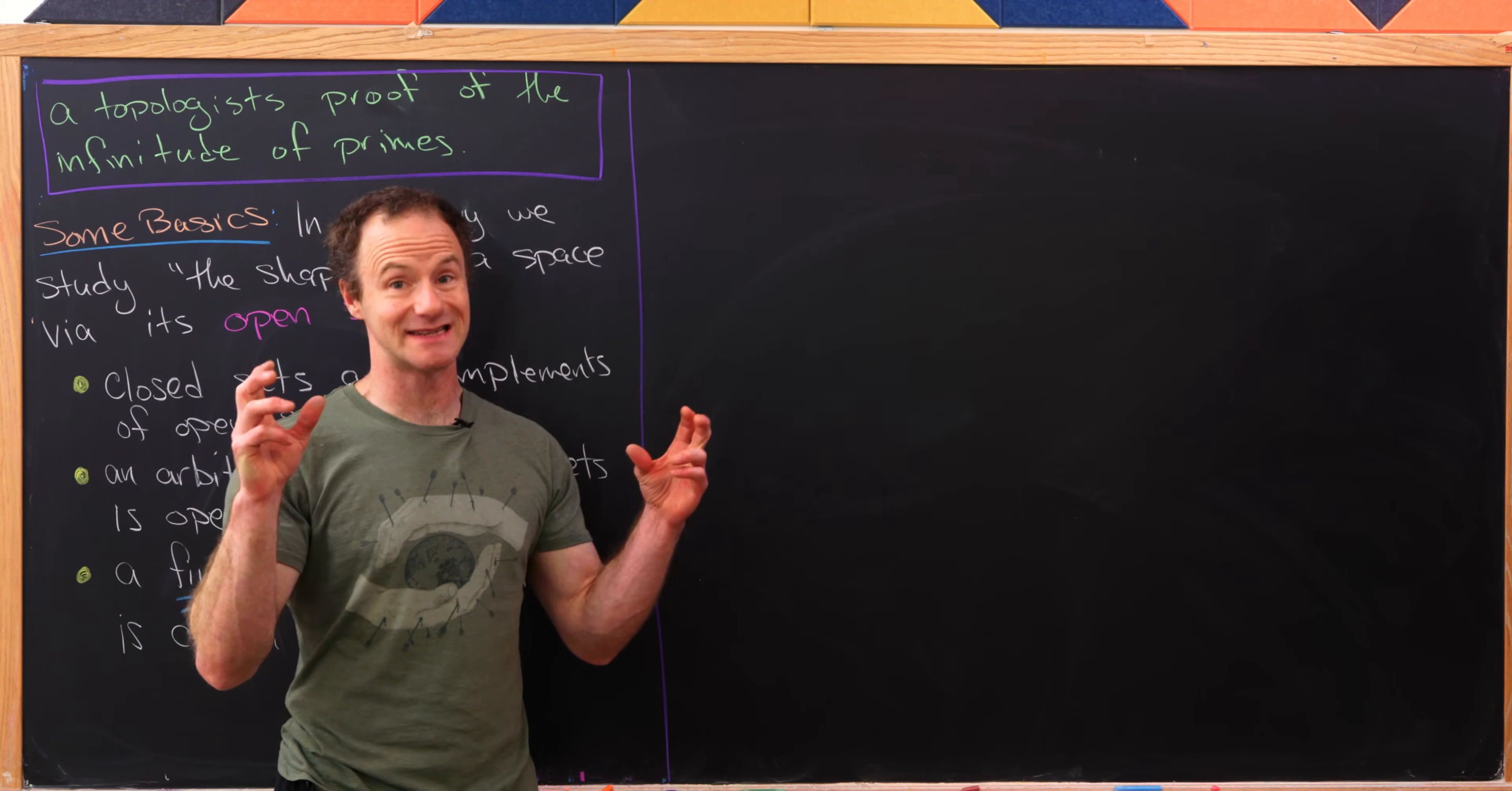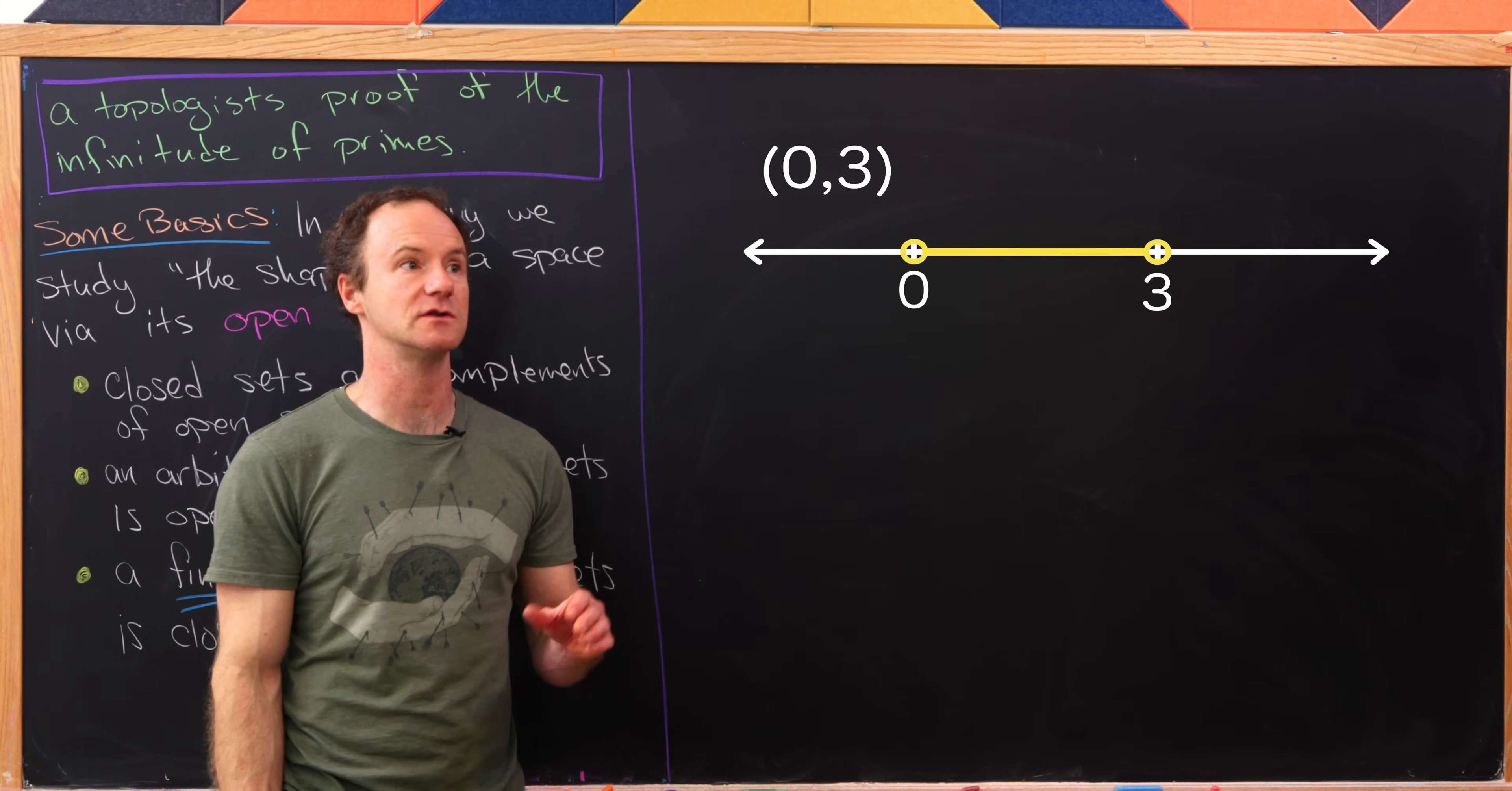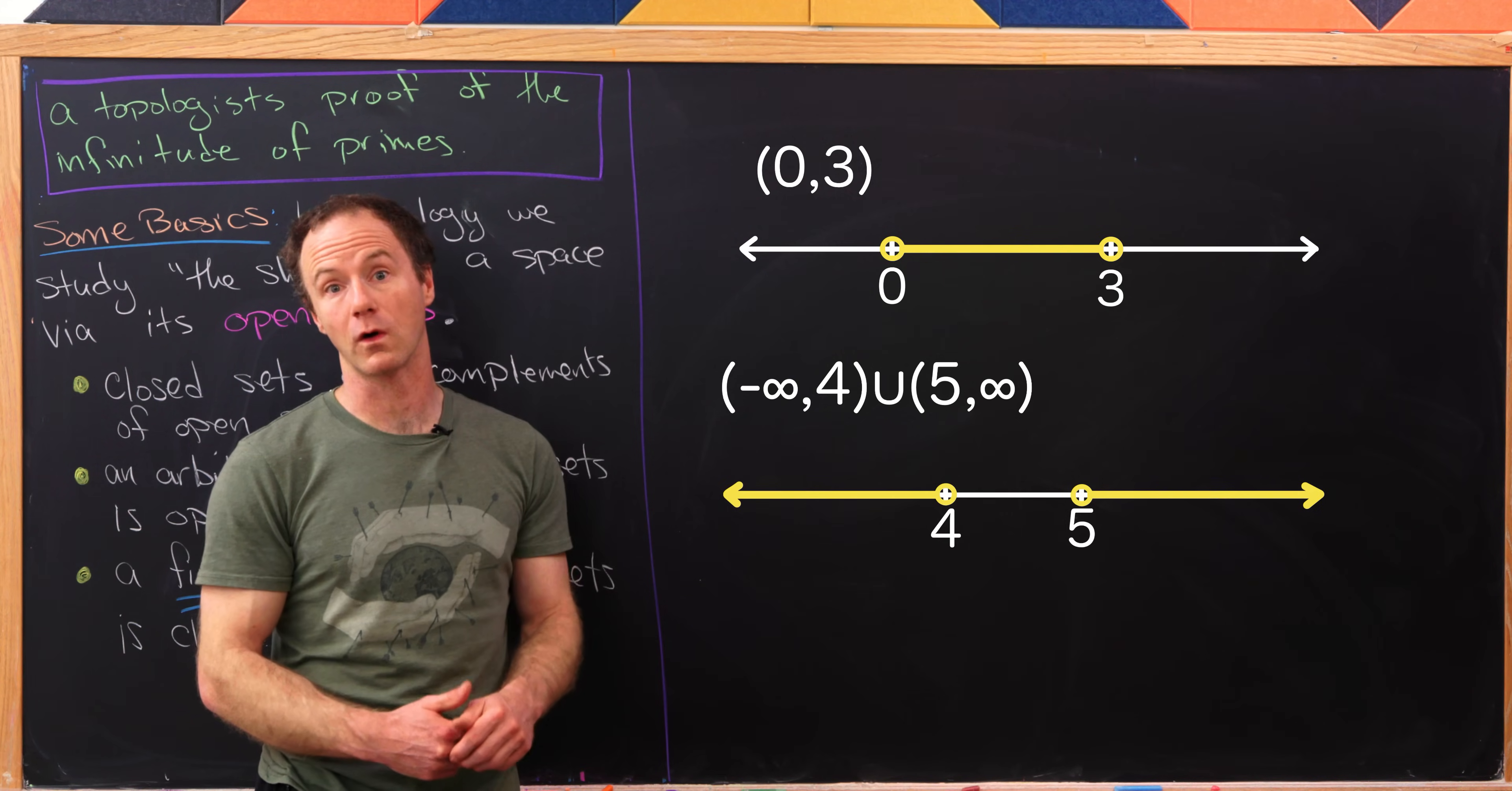And inside what's called the standard topology on R, the basic open sets are merely open intervals. These may be finite open intervals, like the interval from 0 to 3, not including 0 and not including 3. These might be infinite open intervals, like the interval from 5 to infinity, or the interval from negative infinity to 4.